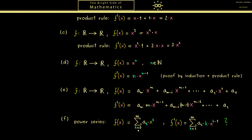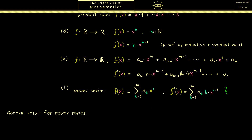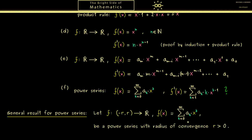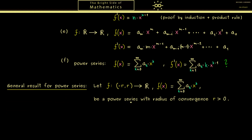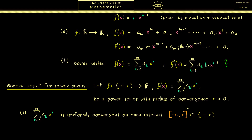Indeed, in some sense we can do this using the result from the last video. The general result for power series is very important and you should remember it. The assumption is that f is given by a power series with domain given by the interval from minus r to r, where r is the radius of convergence. We already know we have a well-defined continuous function, and the question is whether it is also differentiable. To answer that, we bring in uniform convergence: the power series is uniformly convergent if we restrict it to a compact interval, namely the interval from minus c to c which lies inside minus r to r.